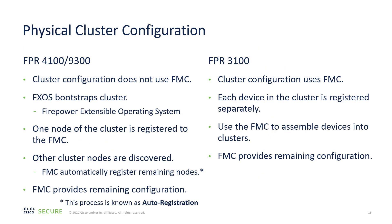So how do you configure clusters? Let's start with the physical clusters. On the Firepower 4100 or 9300, cluster configuration does not use the Firewall Management Center. Instead, you have an underlying operating system called FXOS — the Firepower Extensible Operating System — and that is used to bootstrap the cluster, typically using the chassis manager. One node is then registered to the FMC, and the FMC will dynamically discover the other nodes. This is called auto registration. Once the cluster is discovered by the management center, the management center is used for all subsequent configuration.